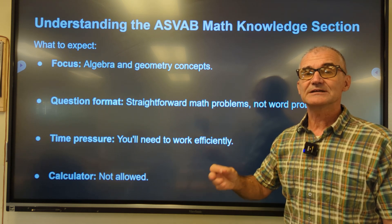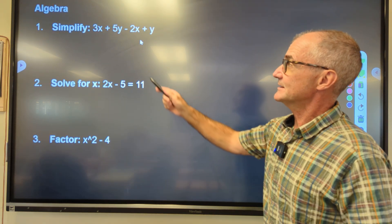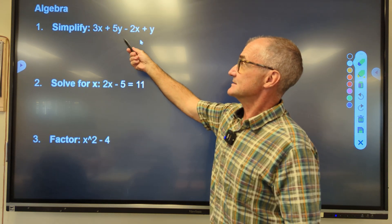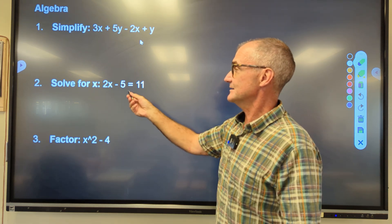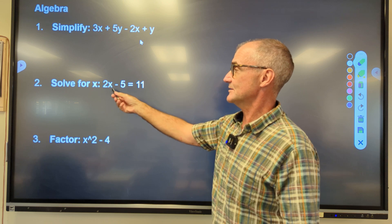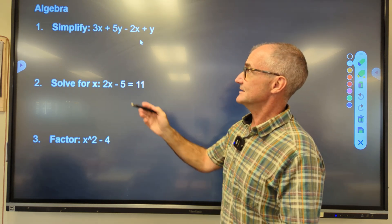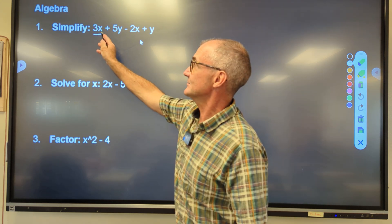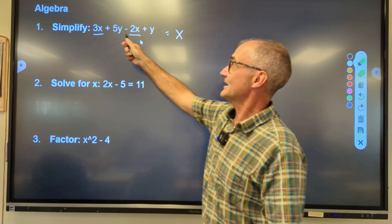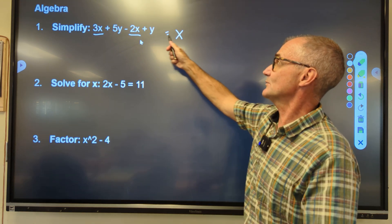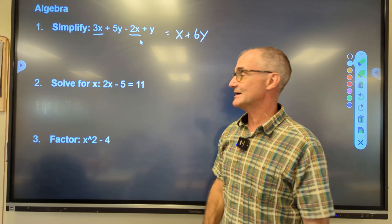Three algebra, three geometry, two order of operation problems. Here are the three algebra problems. Simplify. This is an expression, not an equation. There is no equal sign there, like this right here. This is going to be solved for the value x. This, all you can do is combine similar terms. So I'm going to add all my x terms together. 3x minus 2x is equal to 1x. 5y plus 1y is 6y. That's how easy it is. You just have to know the rules of mathematics.